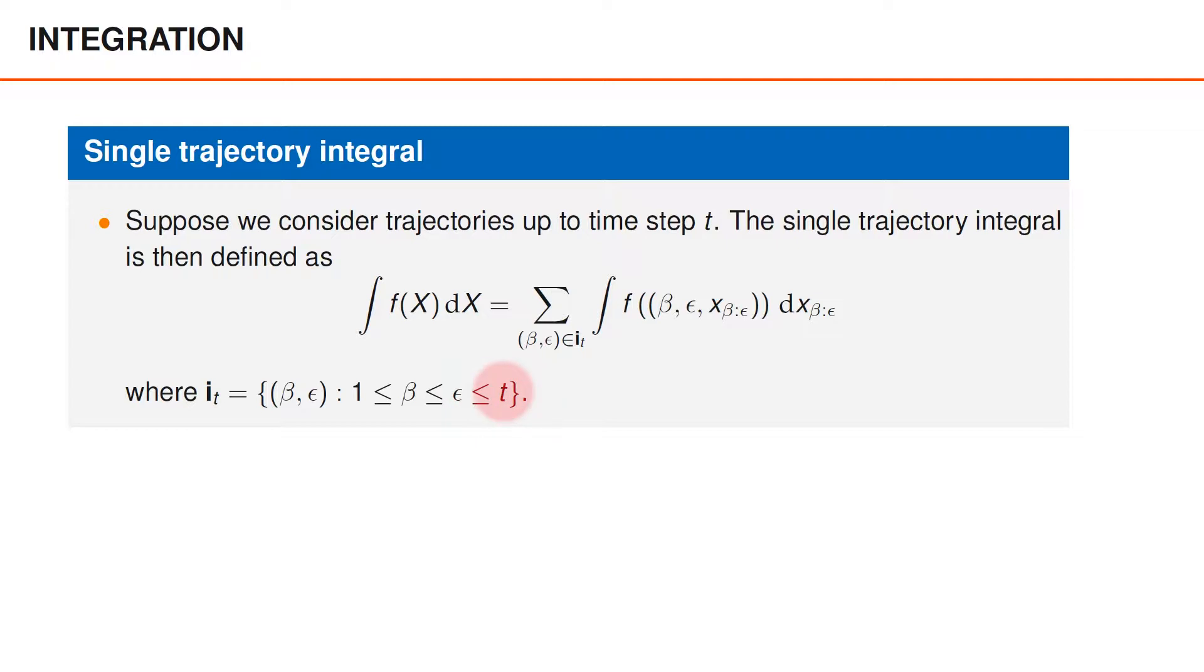Note that we can set t to be some ridiculously large number, and in practice you don't ever need to select the value for t, as long as your functions are zero for sufficiently long trajectories. To compute the integral over a trajectory, we sum over all possible trajectories within the time interval that we are considering. This is a straightforward extension of the integrals that we have seen previously.